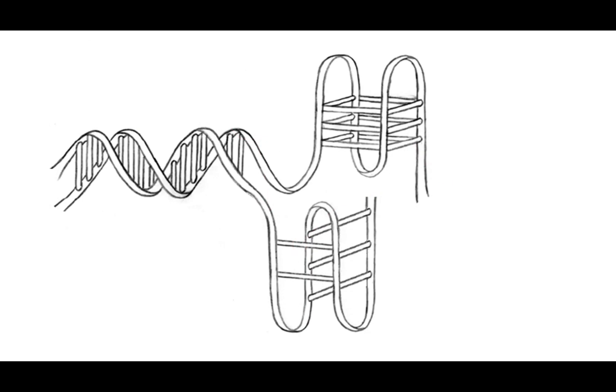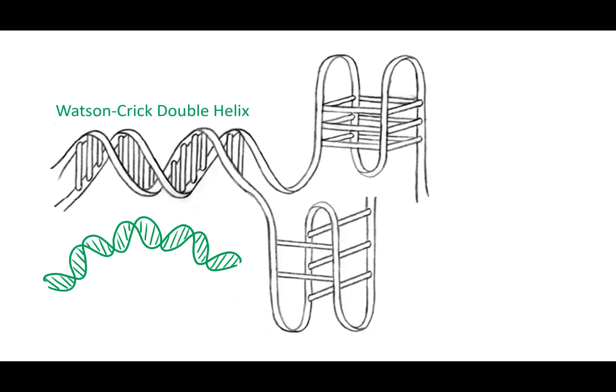In DNA, two strands of the building blocks can coil together to form what is known as a double helix. This structure is a bit like a twisted ladder where the links between the strands, or the rungs of the ladder, hold them together.